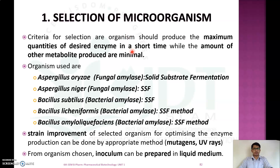The first step is selection of microorganism. The criteria for selection is based on the capability of the microorganism to produce the maximum quantity of the desired enzyme in a short time, with a minimum amount of other metabolites produced. The important microorganisms used for amylase production are: